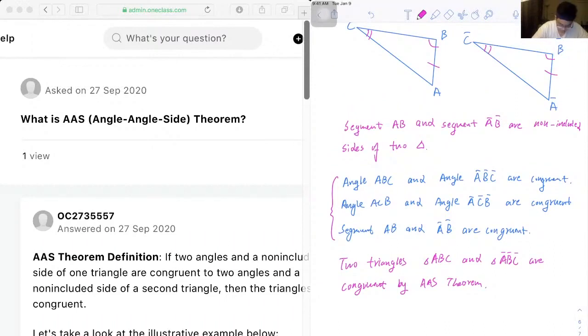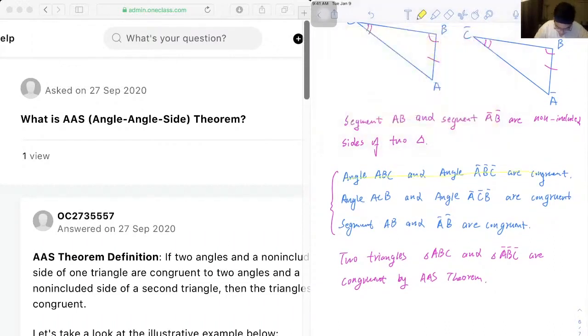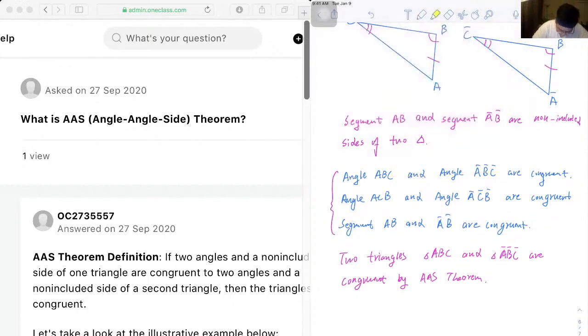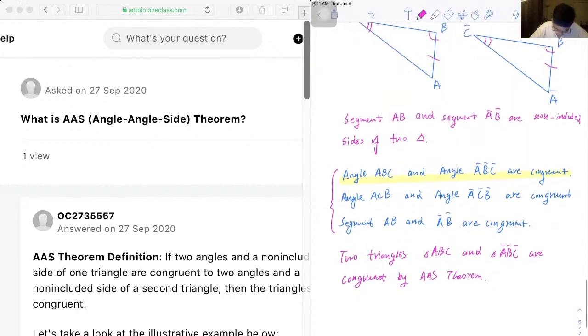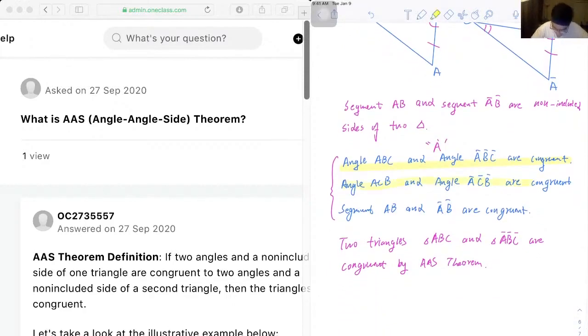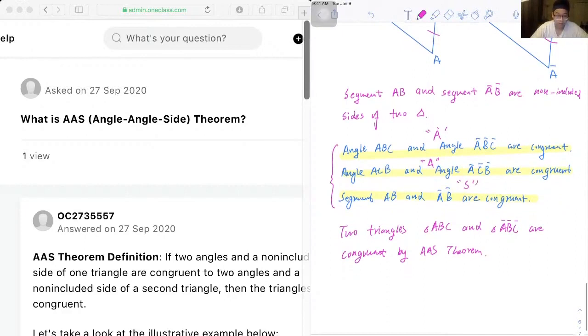So the first sentence refers to the first A, and the second sentence refers to our second A, which stands for angle. And the last sentence stands for S, which stands for side. So therefore, we have our AAS theorem.